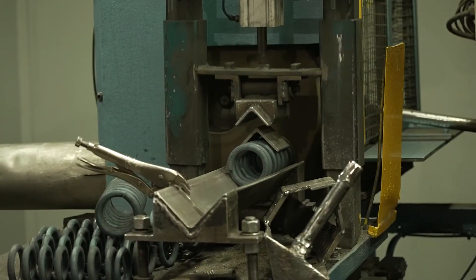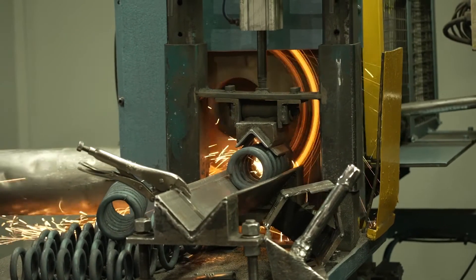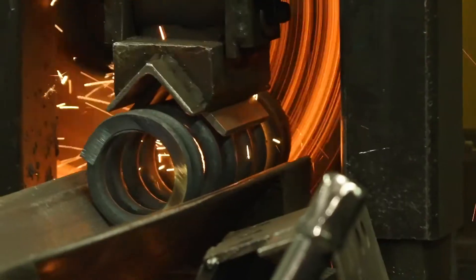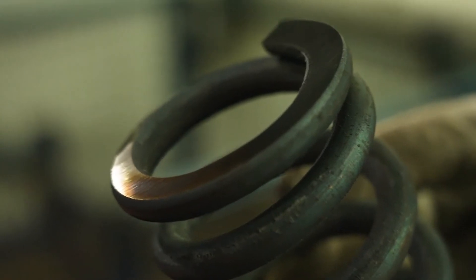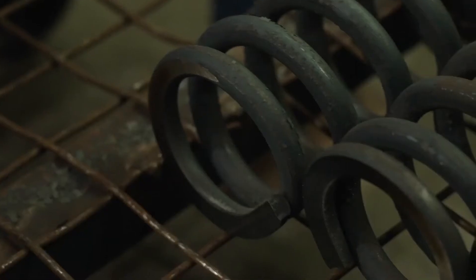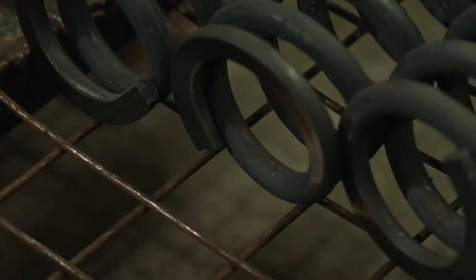The coils are now transported to the grinder, where the top and bottom of the spring is ground away. Depending on the application, if the ends of the springs are required to be flat, they're ground to ensure the coils sit flush once installed.